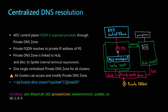They want all private DNS zones attached to the hub virtual network. We can do that with AKS — when we create the AKS cluster, we can specify the private DNS zone and bring your own by specifying its zone ID. We start by creating that private DNS zone and linking it to the hub virtual network. When we create the cluster in its own virtual network, we attach it to that private DNS zone. A second cluster will then reuse the same existing private DNS zone, with only its virtual network being linked to the zone.